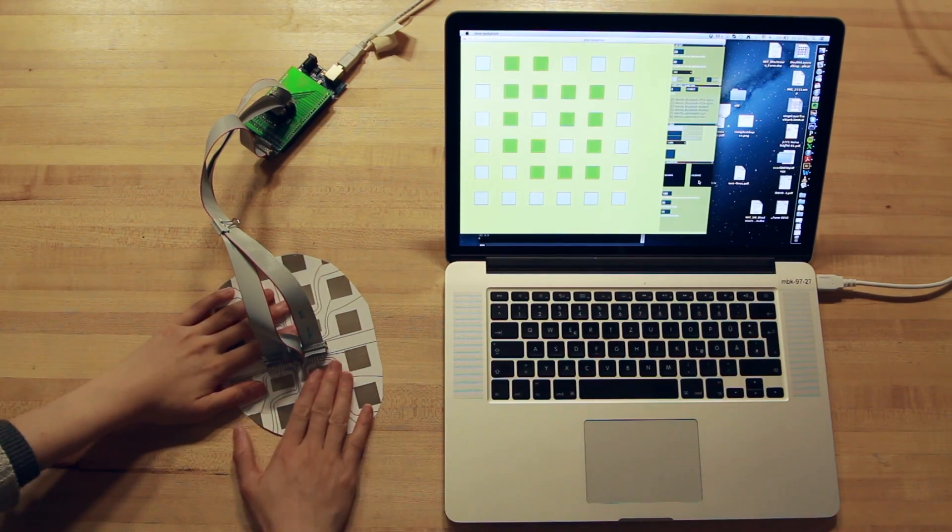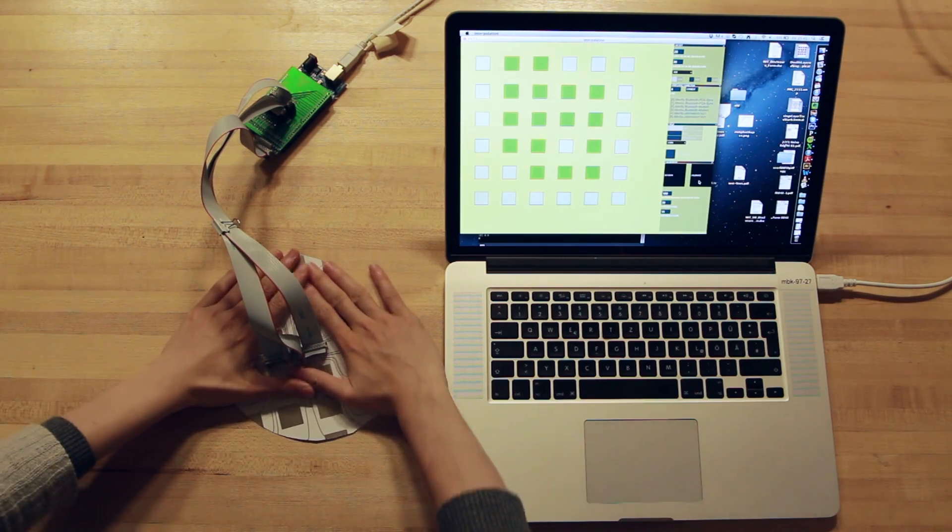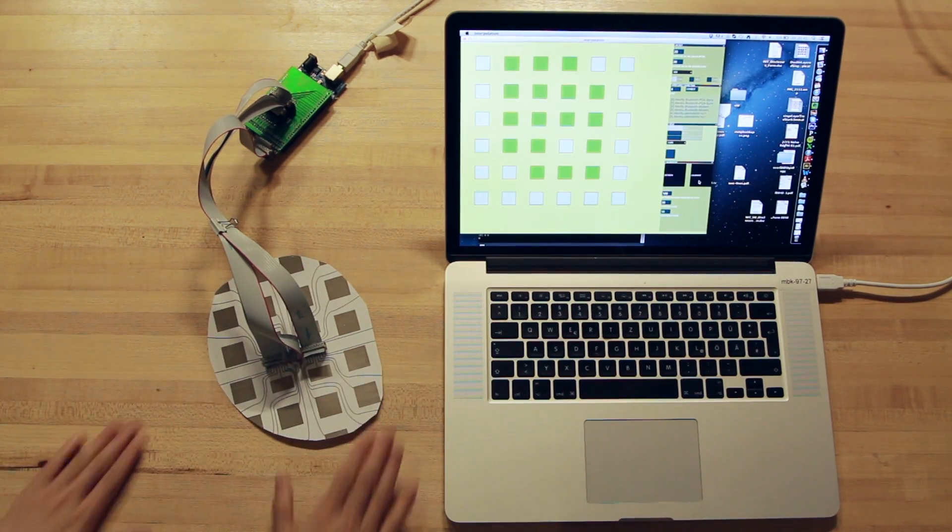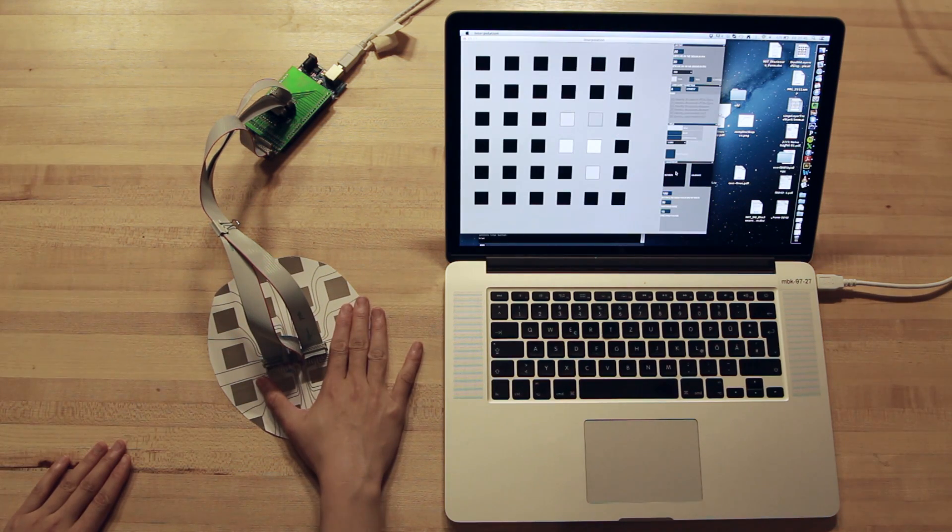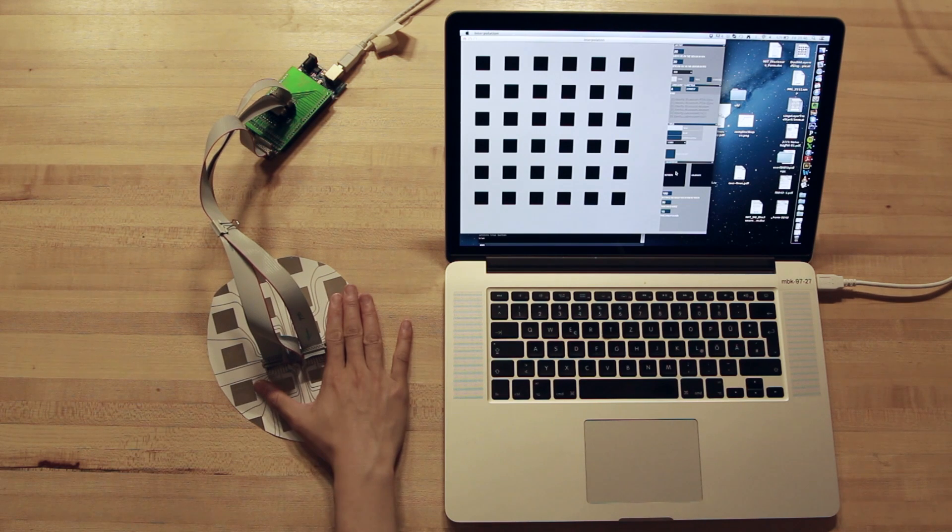We propose a simple calibration step to normalize sensor readings from partially cut electrodes. Due to its star topology, the sensor remains functional and supports multi-touch input.